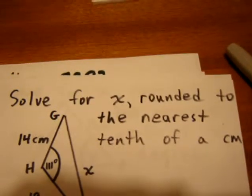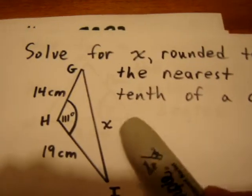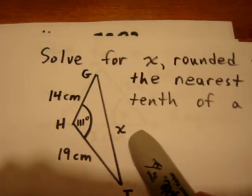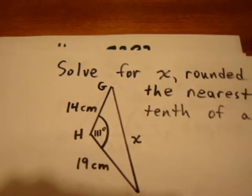Our next question asks that we solve for x rounded to the nearest tenth of a centimeter. In this case, x is a side length, and we see right away that we're unable to set up the sine law because we have a side-angle-side situation.